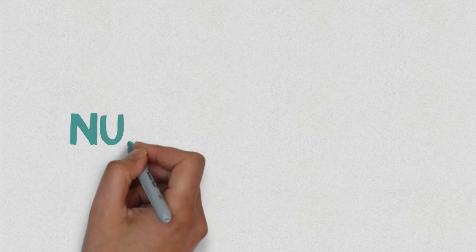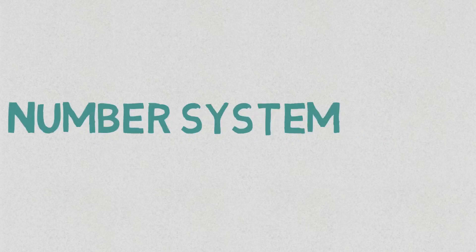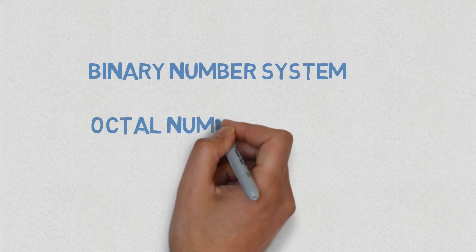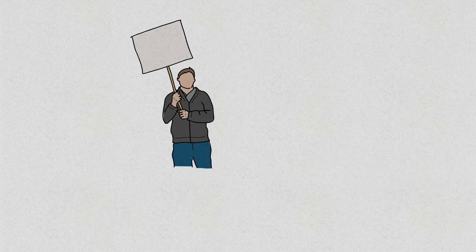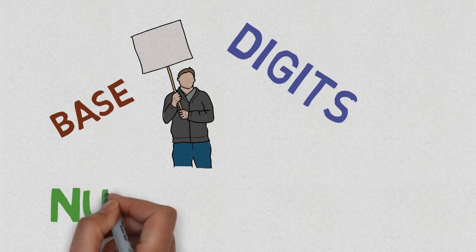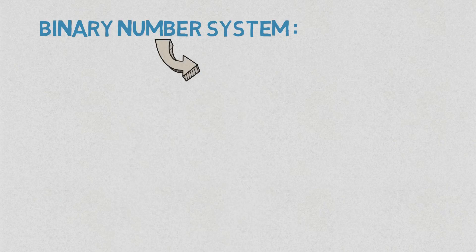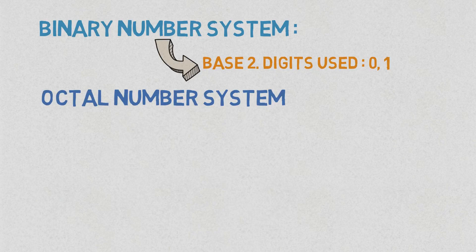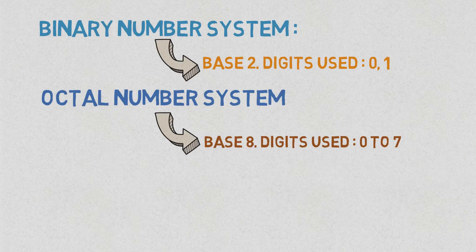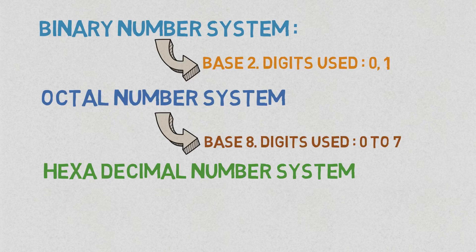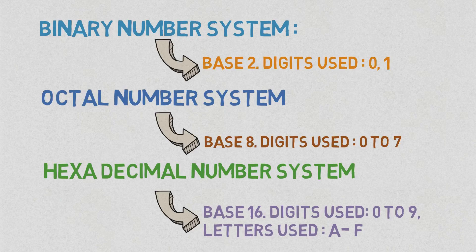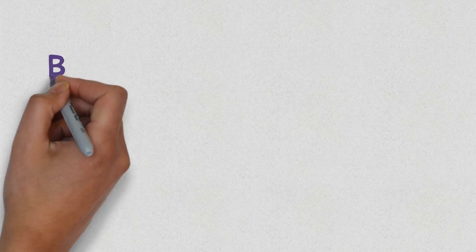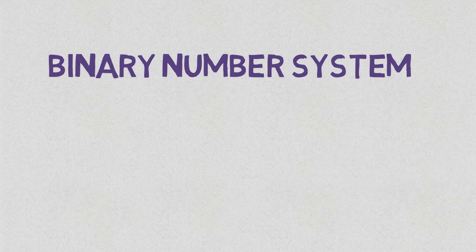We are now going to look at three other important number systems: the binary number system, the octal number system, and the hexadecimal number system. First, we will know what the bases are and what digits are used. In binary, the base is 2 and the digits used are 0 and 1. In octal, the base is 8 and digits are 0 through 7. In hexadecimal, the base is 16, using digits 0 to 9 and letters A to F.